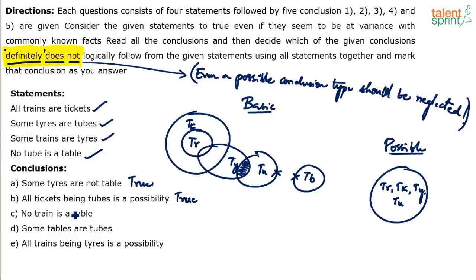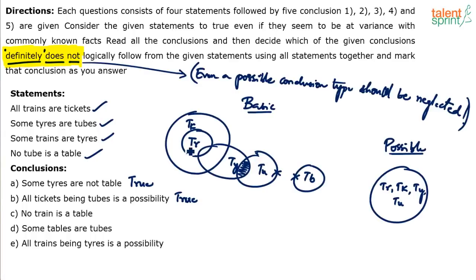Third conclusion: no train is a table. Is it true? If you look at the basic diagram, it looks true because trains and tables are not touching each other. But then tables can come and touch trains, making 'no train is a table' false. So in the basic diagram this conclusion holds, but it will not always be true because tables can overlap with trains.